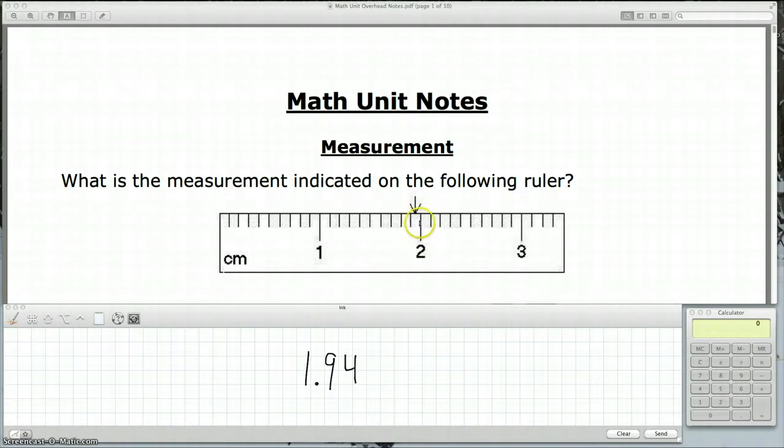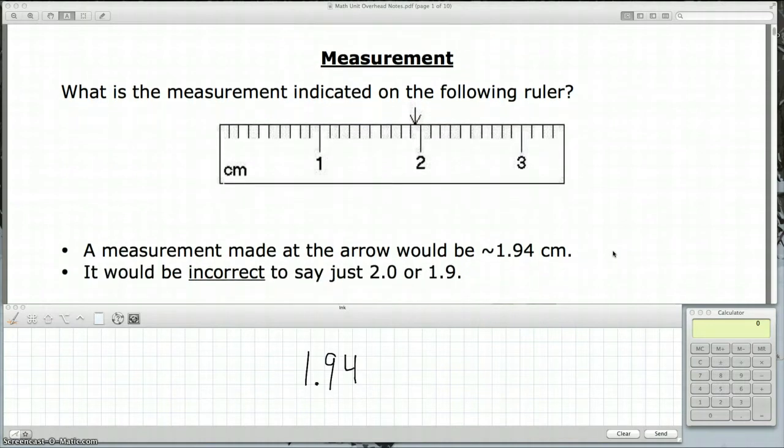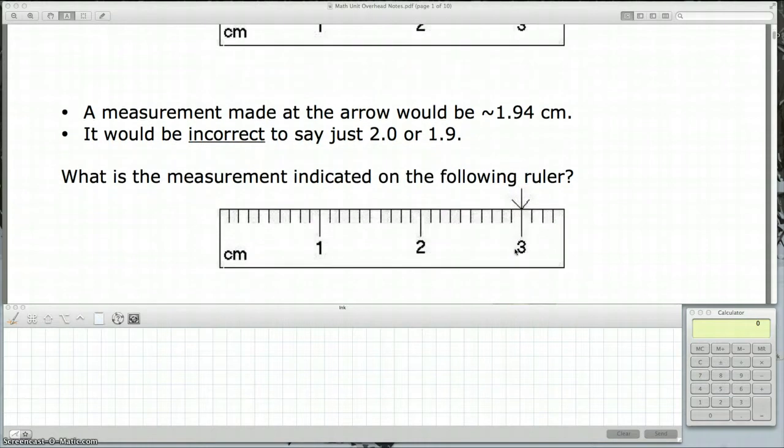Now if you said 1.95, that's a perfectly good answer too. That last number, that 4, is an estimate. So let's look at the next ruler. I just want to make a point that to say it's 2.0 or 1.9, that is incorrect. We know it's neither of those things. It's in between. So it's about 1.94, and like I said, if you said 1.95, that's a perfectly correct answer too. That last number is an estimate.